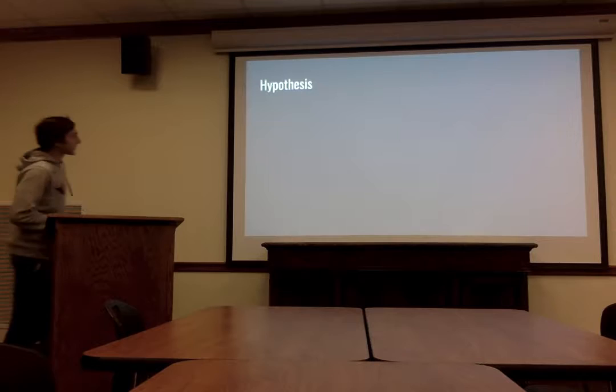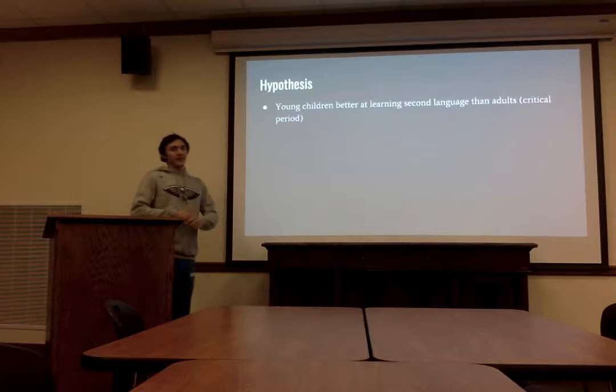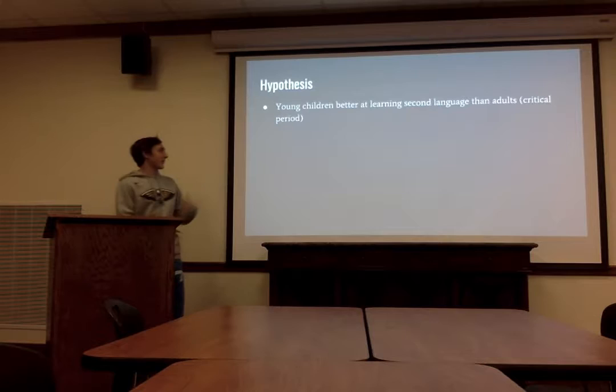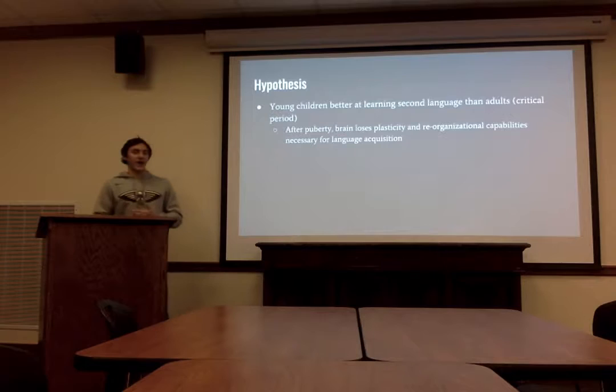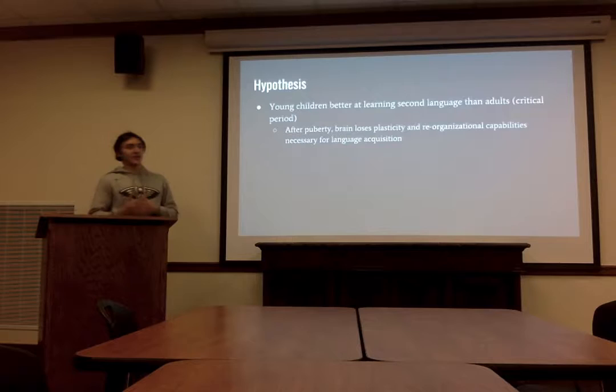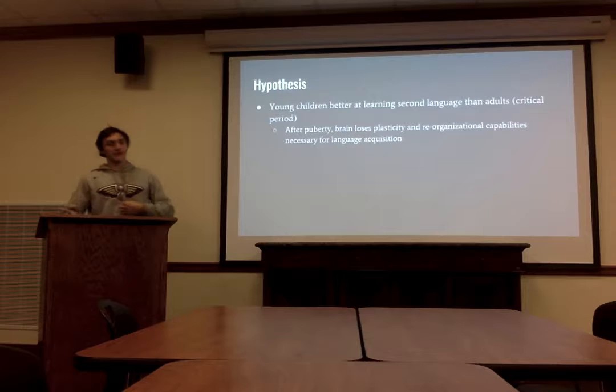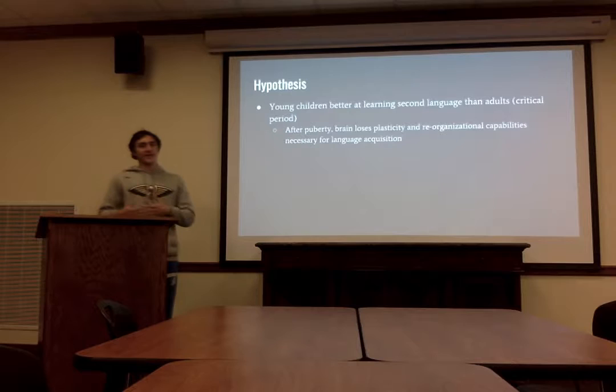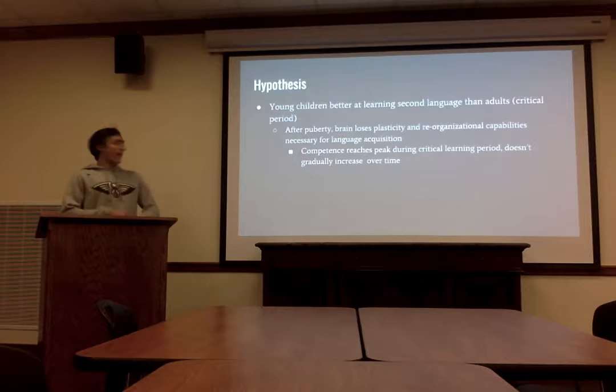The hypothesis of this experiment was generally that young children are better at learning a second language than adults, specifically when they are in the critical learning period. After puberty, the brain loses its plasticity and organizational capabilities. During puberty your brain is still growing, so it has a chance to adjust to new languages. But when you're an adult, your brain isn't growing or molding anymore — it's fixed, so it doesn't have that organizational capability. Competence, like understanding the language, reaches its peak during the critical period, before puberty.